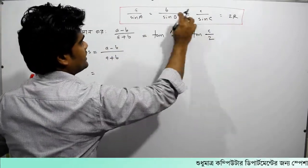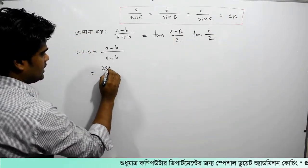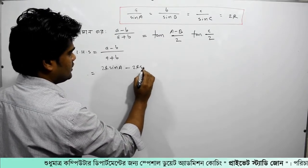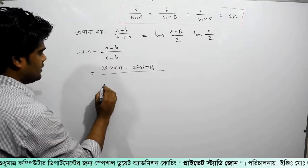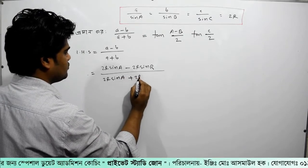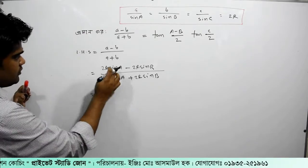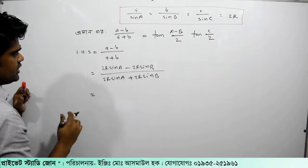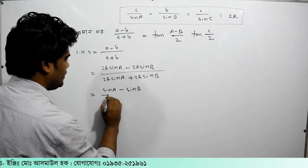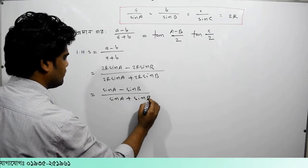By the sine rule, a is equal to 2R sin A. So, sin A minus sin B divided by sin A plus sin B. If I have a point of view, 2R is common and cancels, giving us sin A minus sin B divided by sin A plus sin B.